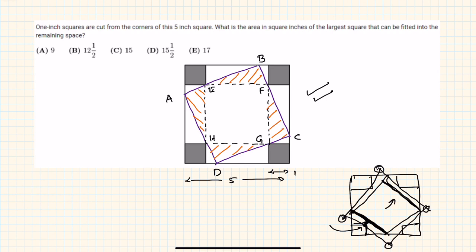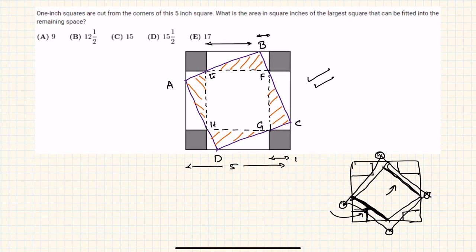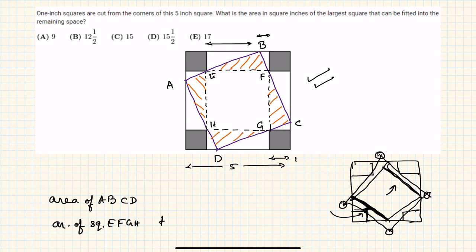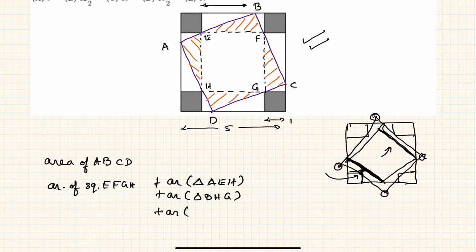We don't know the smaller lengths, but we don't actually require them to find this area. The area of square ABCD is nothing but the area of square EFGH plus the area of four triangles: triangle AEH, triangle DHG, triangle CGF, and triangle BFE.